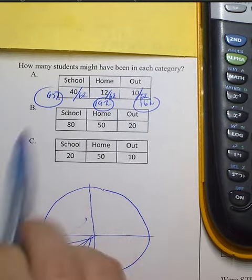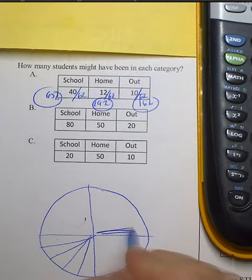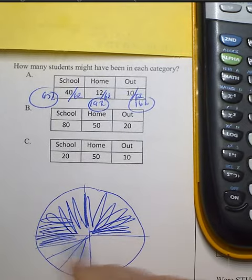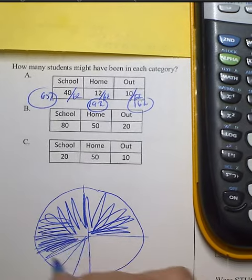I need to get up to 65. So here's 25. There's 50. 55, 60, 65.